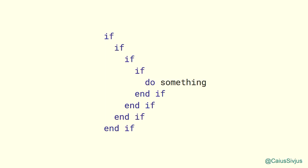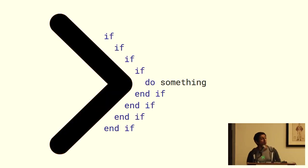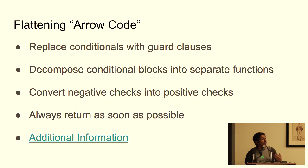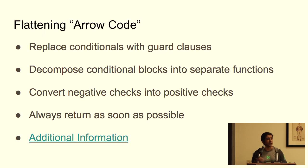A series of nested if statements makes your code look like an arrow. Guard clauses aren't the only way to flatten arrow code — I've provided a link you can check out later for more on this.